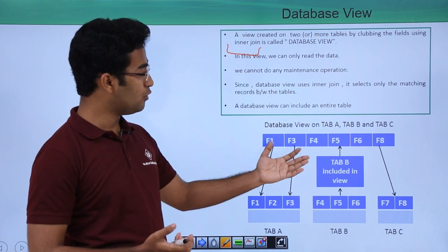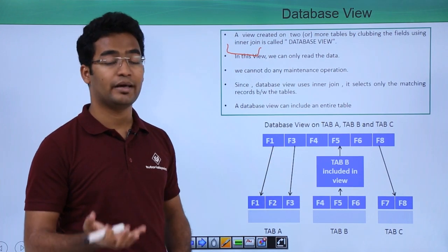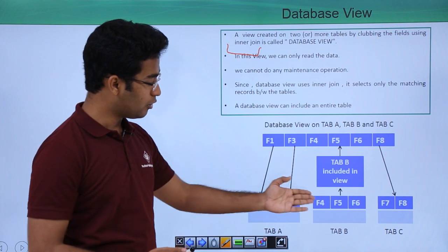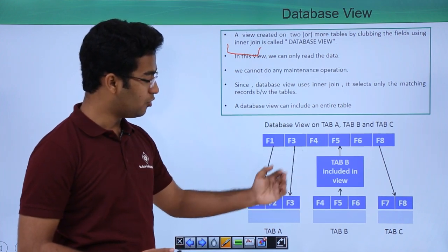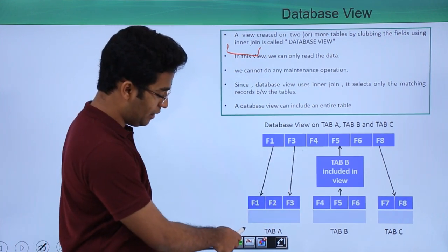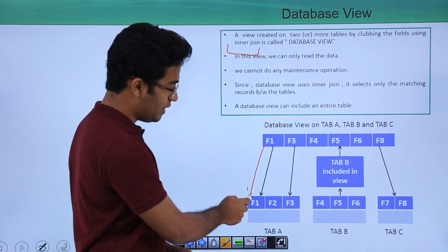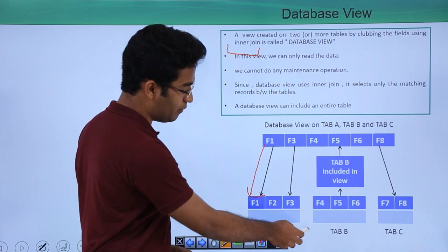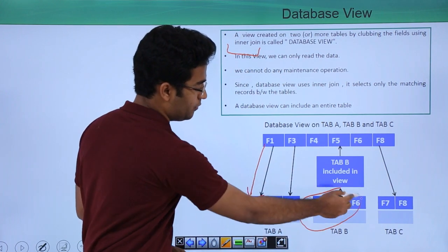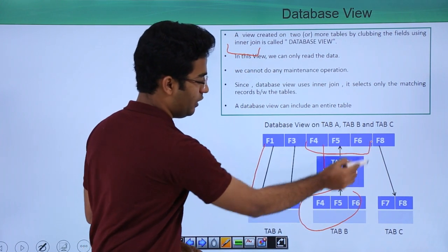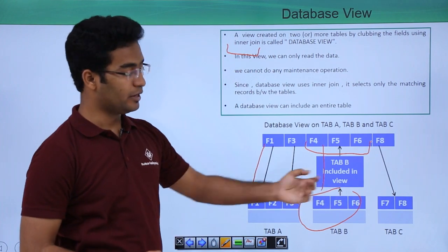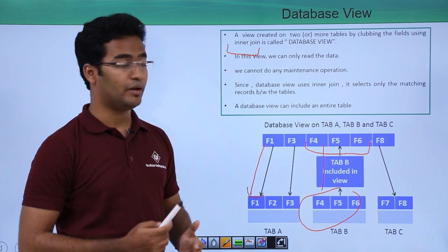Moreover, it can also include the whole entire table itself. From table A it is selecting field 1, from table B it is selecting the full table, and from table C it is selecting only field 8.